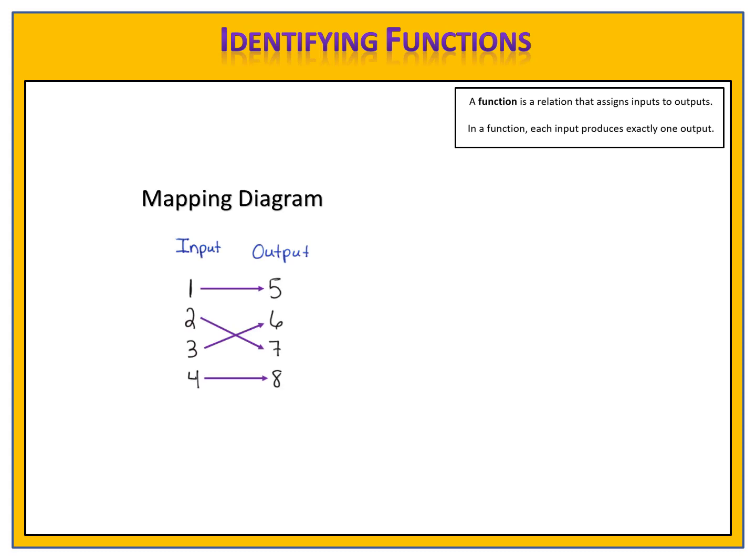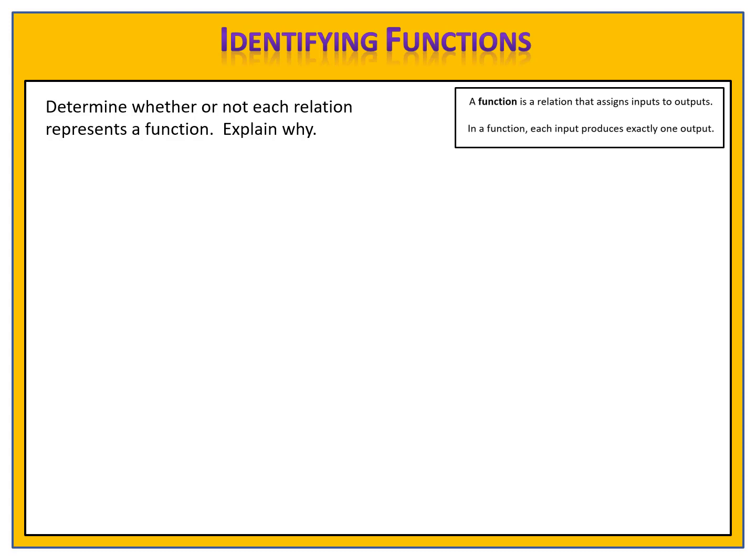Here's an example of a function, which is in the form of a mapping diagram. A mapping diagram contains a list of inputs and outputs, with arrows that show how they're connected. Let's take a look at three different mapping diagrams, and we'll determine whether or not each represents a function.